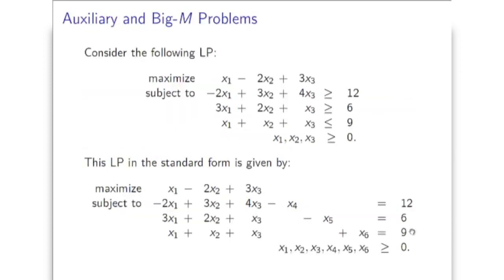So let's consider the following problem. We have the problem of maximizing x1 minus 2x2 plus 3x3 subject to three constraints. The first two constraints are in the greater than or equal to form, and the third one is in the less than or equal to form. The first step is to convert this LP into standard form by introducing the excess and slack variables - excess variables for the first and second constraints, and a slack variable for the third. In two out of three constraints, we have a problem with using the excess variables as our initial basic variables. For minus x4 equal to 12, we get a negative value for x4, and for minus x5 equal to 6, we get a negative value for x5. Therefore, we need to introduce artificial variables for these two constraints.